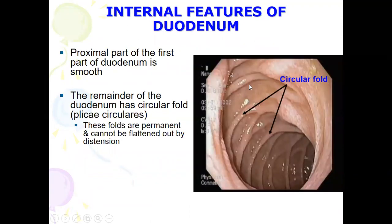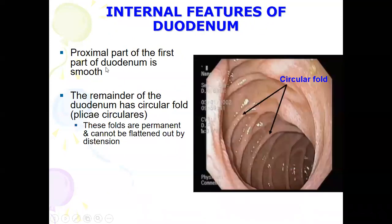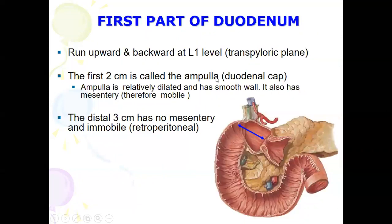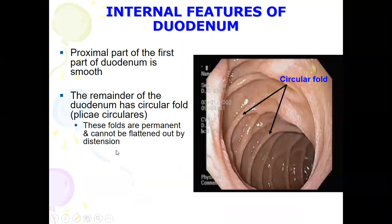When you open the duodenum, the proximal part — the first inch or first 2 cm — of the first part is smooth. This part is known as the ampulla or duodenal cap. It is relatively dilated with a smooth wall and has a mesentery, meaning it is mobile and intraperitoneal. The remaining 3 cm does not have a mesentery and is an immobile retroperitoneal organ.